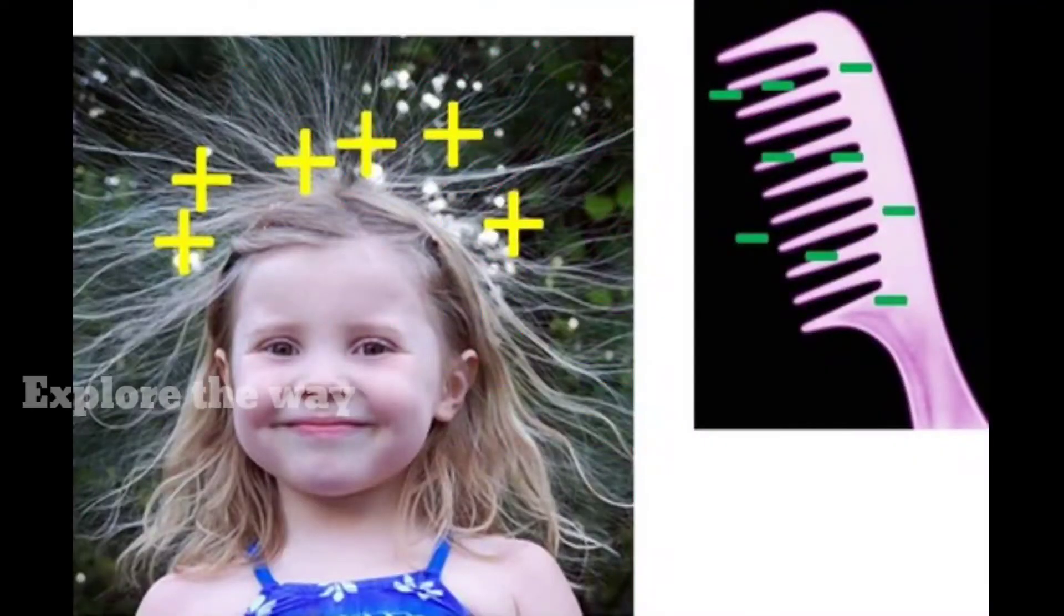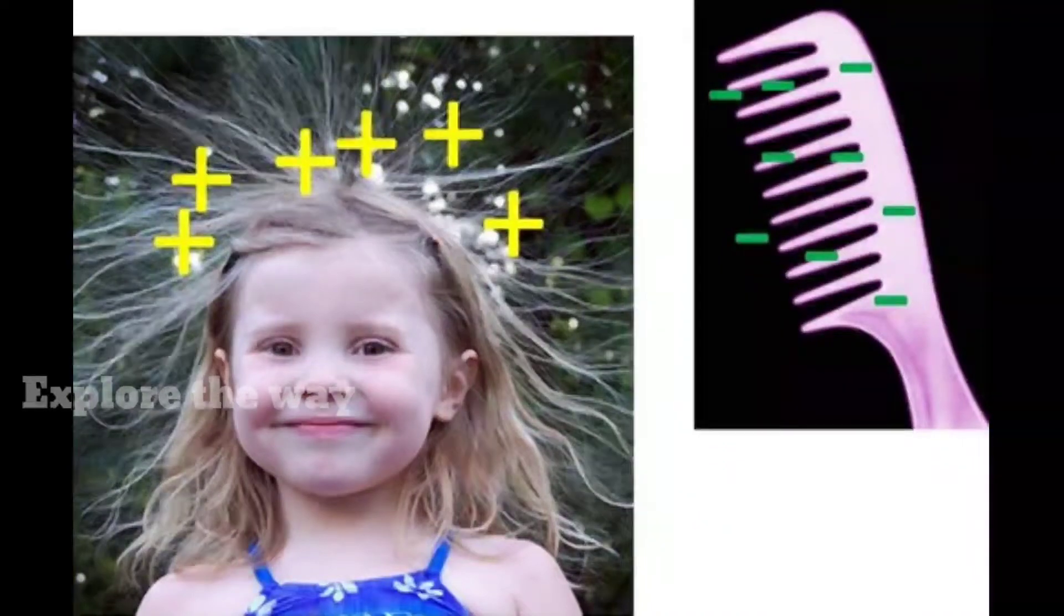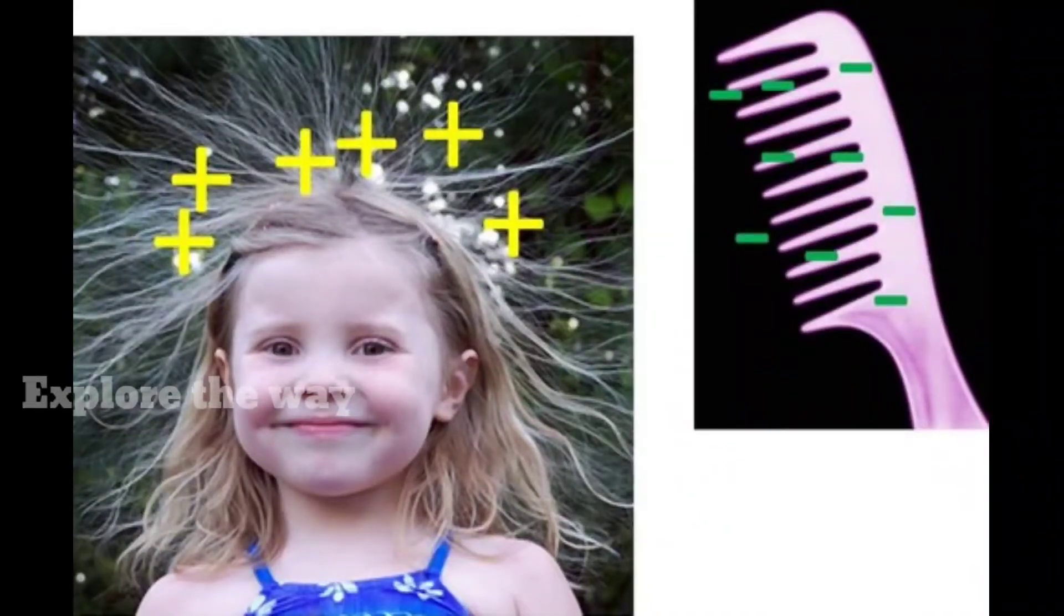This imbalance of electrons means the objects are electrically charged. One object is positively charged and the other is negatively charged.